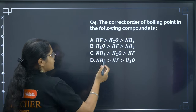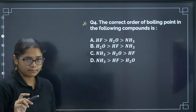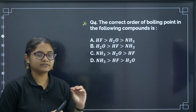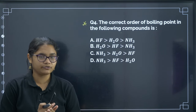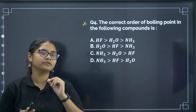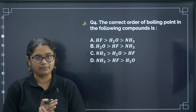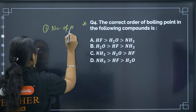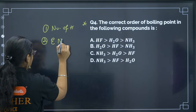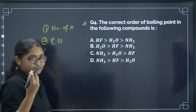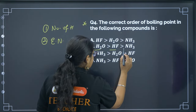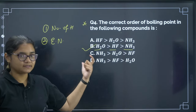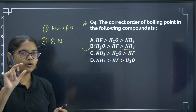Next: the correct order of boiling points of the given compounds. Boiling point depends on intermolecular forces; for these compounds it is hydrogen bonding. Hydrogen bonding also depends on the number of hydrogen bonds formed and the electronegativity of the element. Based on these two factors — number of hydrogen bonds and electronegativity — the experimentally observed order is: H₂O > HF > NH₃. Please remember this order. The correct answer is option B.